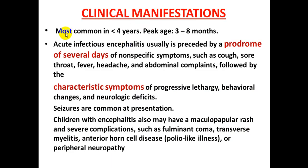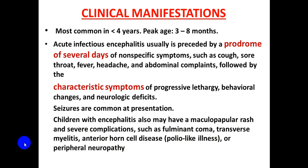Encephalitis is most common in children less than 4 years, with a peak incidence at 3–8 months. Acute infectious encephalitis is usually preceded by a prodrome of several days of non-specific symptoms such as cough, sore throat, fever, headache, and abdominal pain, followed by progressive lethargy, disturbed level of consciousness, behavioral changes, and neurological deficits. Seizures are common at presentation. Severe complications include fulminant coma, transverse myelitis, anterior horn cell disease, polio-like illness, or peripheral neuropathy.